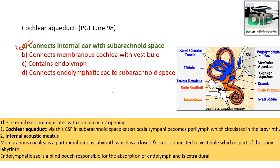Looking at the diagram: this is the internal ear, and this is part of the cranium with the subarachnoid space. The internal ear communicates with the cranium through two openings — the cochlear aqueduct and the vestibular aqueduct. Option B is wrong because the membranous cochlea is a closed space with no connection to the vestibule. Option C is wrong — the cochlear aqueduct contains perilymph, not endolymph.